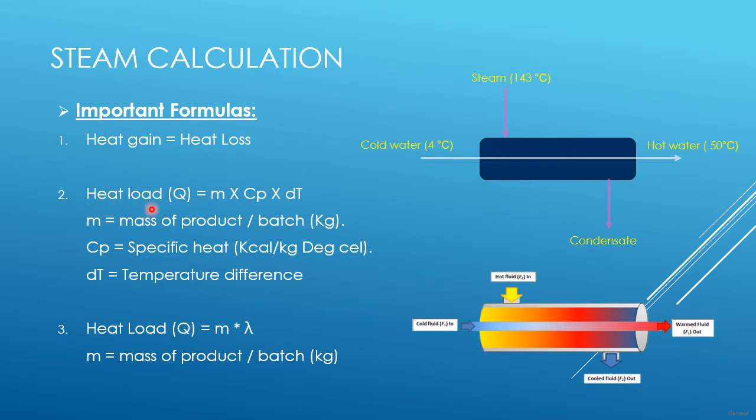First is the heat load that is Q. What is heat load? Heat load means the heat amount, it is a total quantity of energy. Let's see how to calculate. M is the mass into Cp into delta T. M is the mass of product or batch in kg. Then Cp means specific heat. Then delta T is the temperature difference like 50 degree minus 4 degree. It is my delta T, so 46 degree is the delta T.